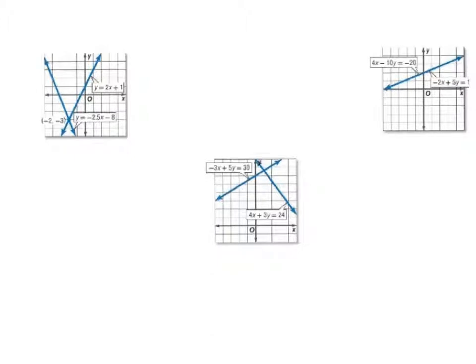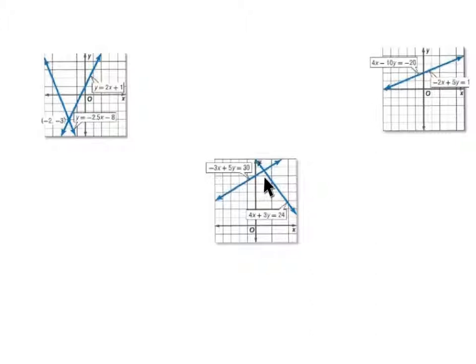Here you can take a look at what these systems look like. You can see these are two lines — one with a positive and one with a negative slope — and they intersect in one point, so they are consistent and independent because they have one solution. The solution where they intersect is at negative 2, negative 3. Here you can see you have the same line, so there are infinitely many solutions along that line. And over here you have two lines that intersect, and it's at the intersection point that the single solution is.